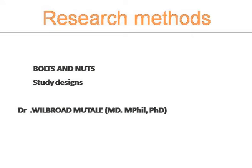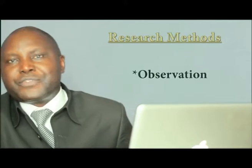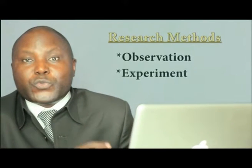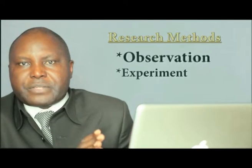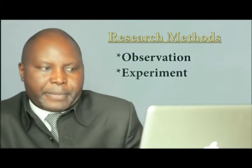Today we are starting with a topic on research methods, and I've deliberately assigned this one as the nuts and bolts of your research methods. My name is Wilbro Ademutale and I'm happy to present this lecture. When you want to do some studies, there are two things that you can do: you could either observe or do an experiment. In summary, there are two study methods: observation type and experimental.